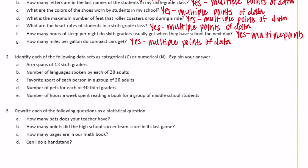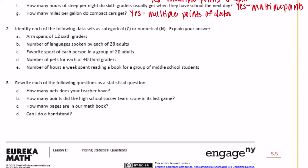Number two: identify each of the following sets as categorical or numerical and explain your answer. Categorical means it falls into a category like colors, shapes, or animals. Numerical means it's answered in numbers. Part A: arm spans of 12 sixth graders — arm span is measured in length, probably inches, so this is numerical because the answers will be numbers like 18 or 25.